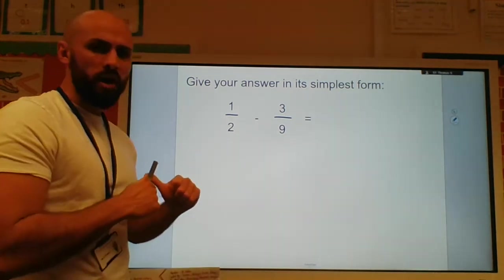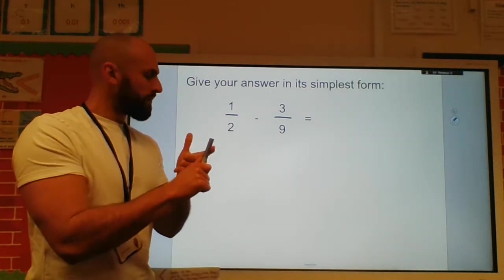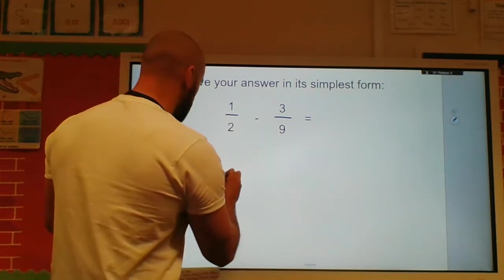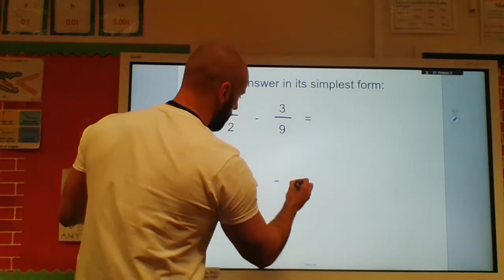I need to come up with a common denominator. So I think of, well, nine, that's not in my twos because it's odd. Eighteen, yes, that is a common multiple of two and nine. So I use eighteen as my common denominator.